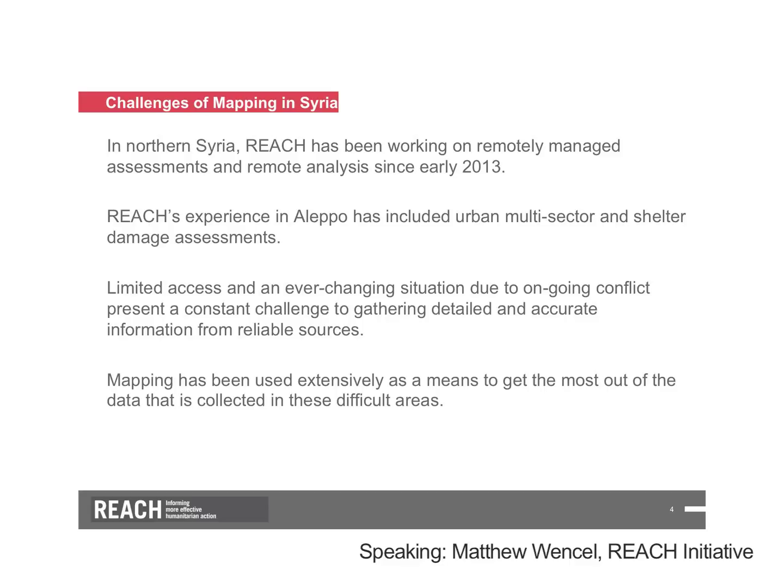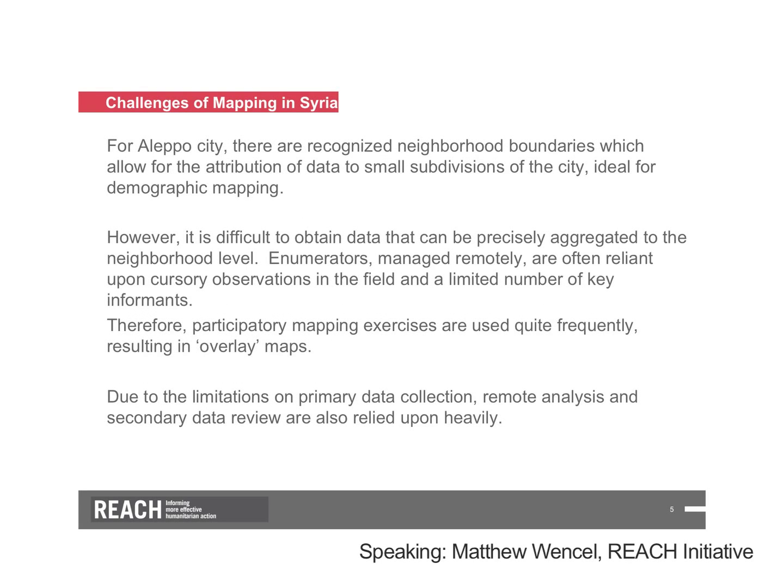In northern Syria, REACH has been working on remotely managed assessments and remote analysis since early 2013. Our experience in Aleppo has included urban multi-sector assessments and shelter damage assessments. Limited access and an ever-changing situation due to ongoing conflict present a constant challenge to gathering detailed and accurate information from reliable sources. Mapping has been used extensively as a means to get the most out of the data collected in these difficult areas. For Aleppo City, there are recognized neighborhood boundaries which allow for the attribution of data to small subdivisions of the city, ideal for demographic mapping. However, it's difficult to obtain data that can be precisely aggregated to the neighborhood level. Enumerators managed remotely are often reliant upon cursory observations in the field and a limited number of key informants, so participatory mapping exercises are used quite frequently, resulting in overlay maps.